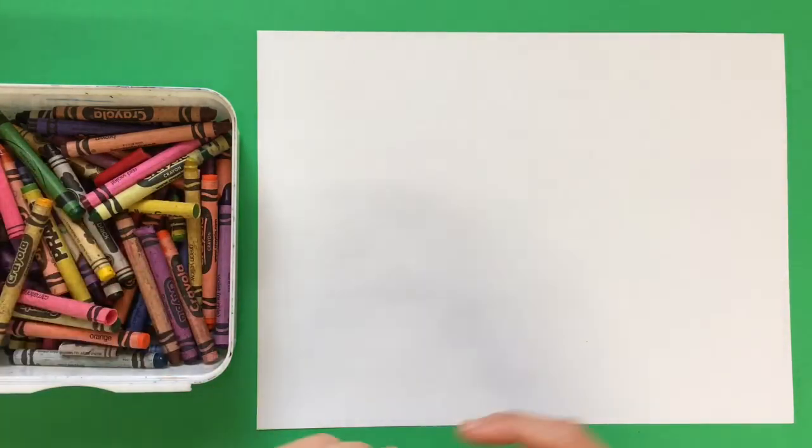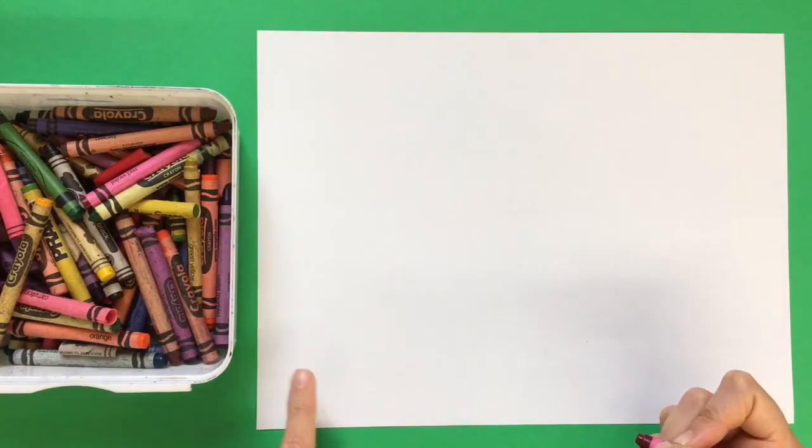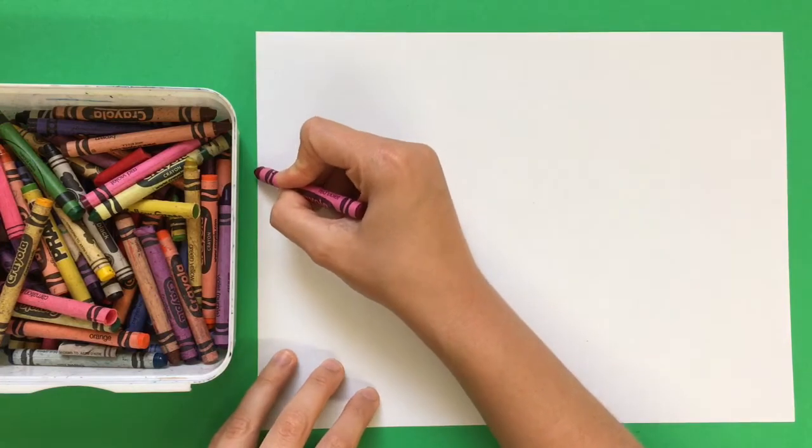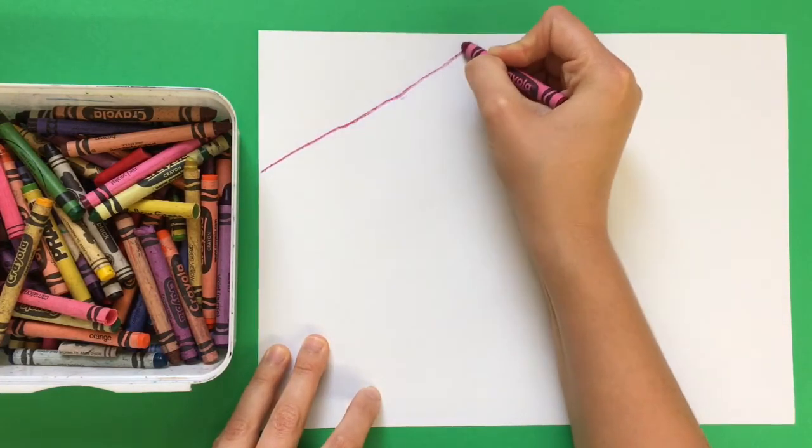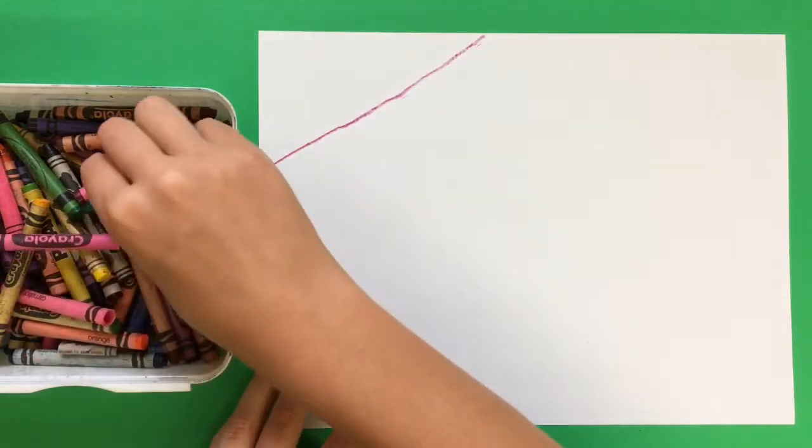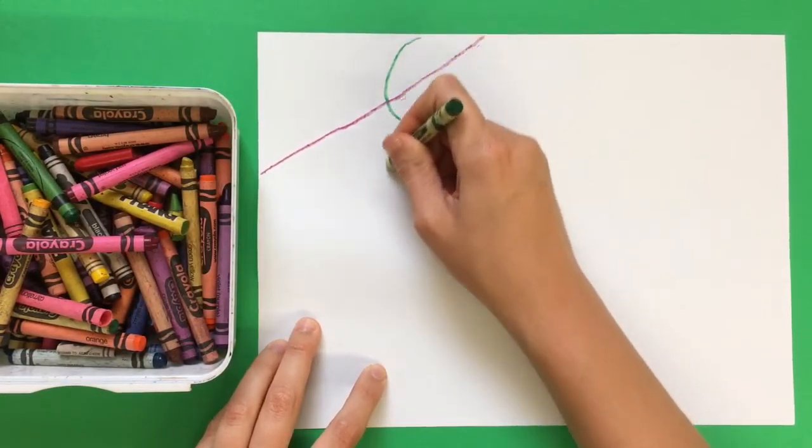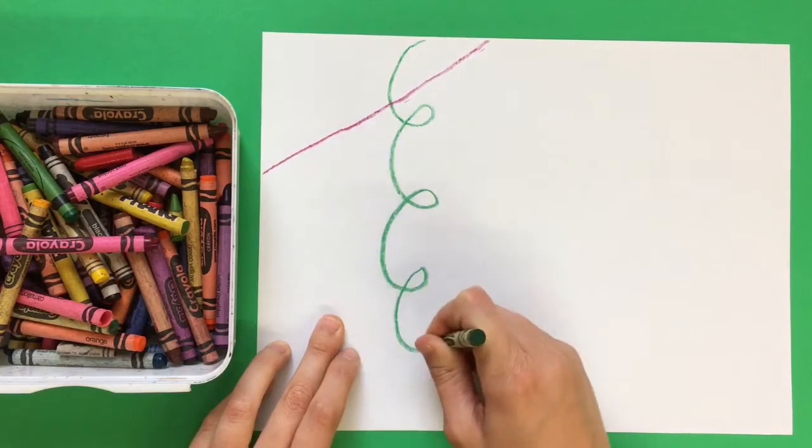Your teacher might say draw a line that goes from one side of the page to another side. I could draw a straight line that goes from this side to this side. I could draw a swirly line that goes from this side to this side.